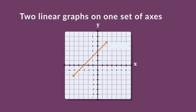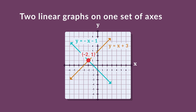Sometimes you will see more than one linear graph on a set of axes. Two linear graphs will always intersect at one point unless they are parallel to each other. This point is a solution to the two equations because it gives us an x value and a y value where the two equations are both valid.